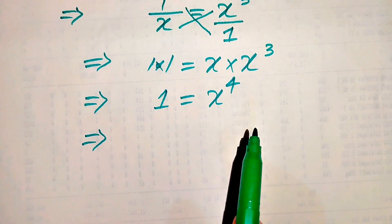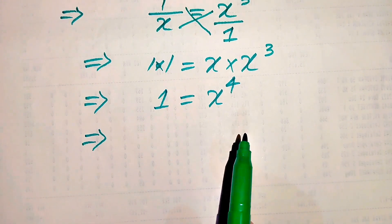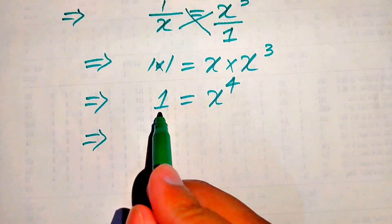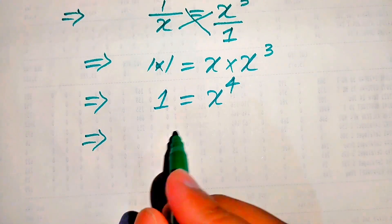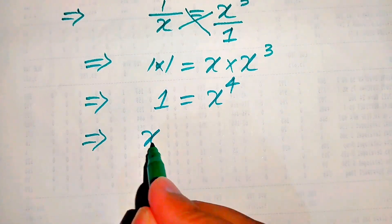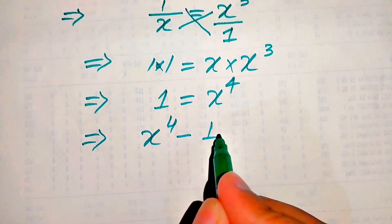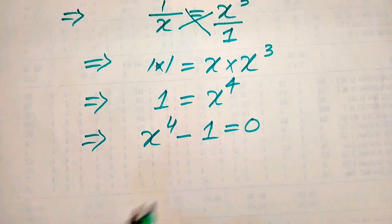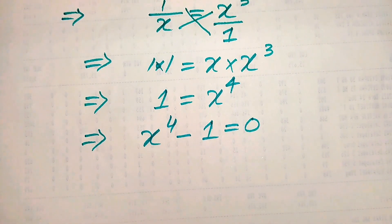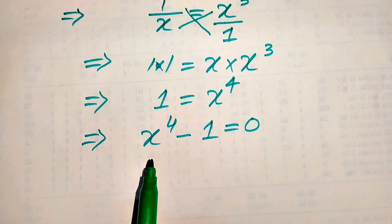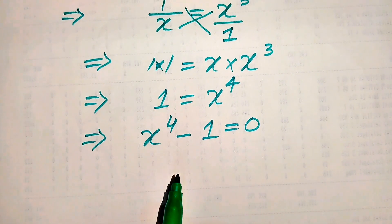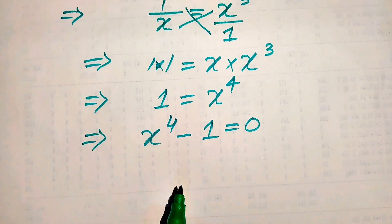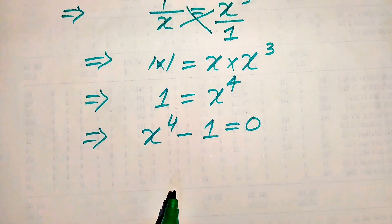In other words, we have a fourth-order equation. Moving the one to the right-hand side, it is written as x to the power of four minus one equals zero. This is a fourth-order equation, which means it has four roots, and we need to find all four roots of this equation.